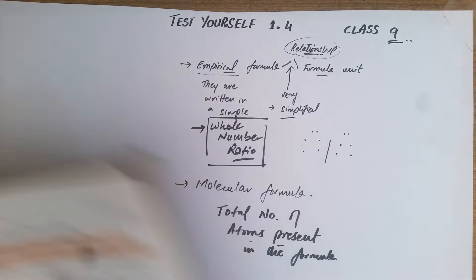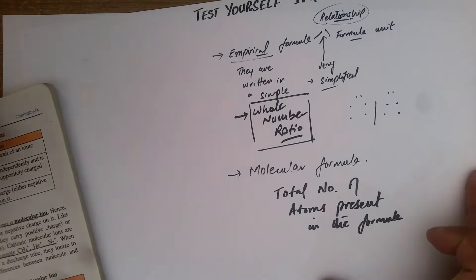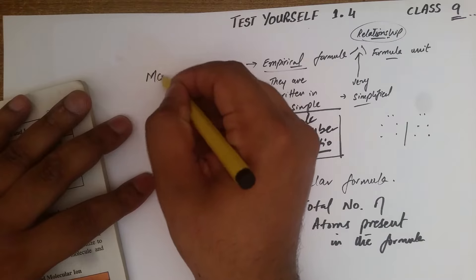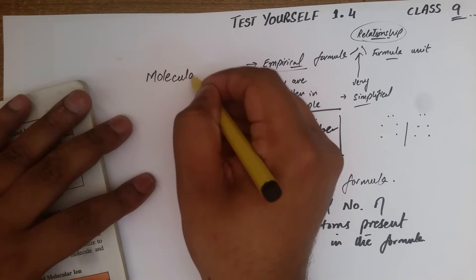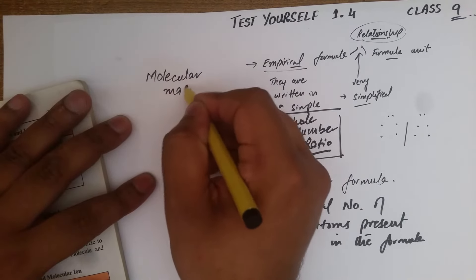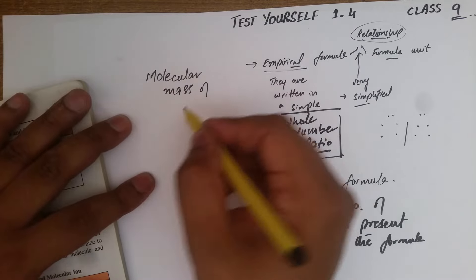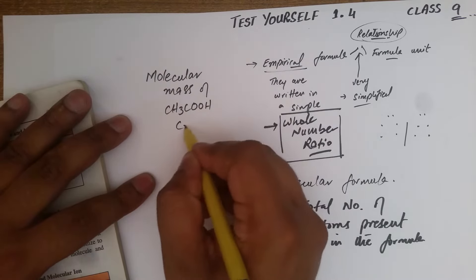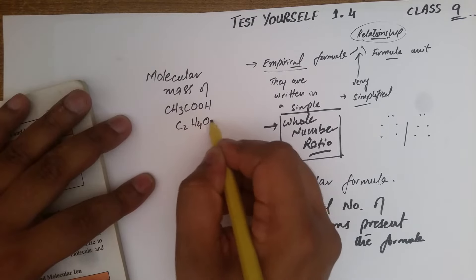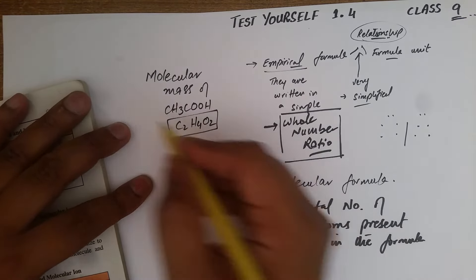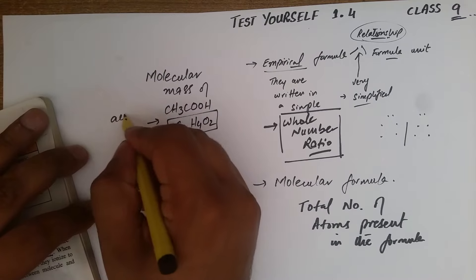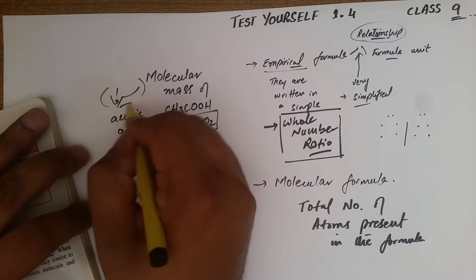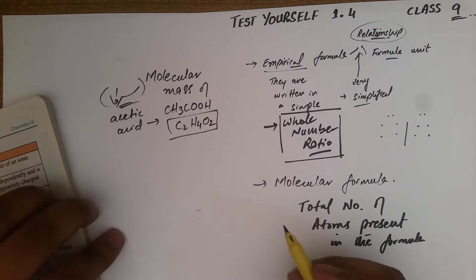Now we have to find the molecular mass. Students, here we have the page and the technique to calculate the molecular mass of CH3COOH — that is C2H4O2 — which is acetic acid. Don't forget acetic acid; it is something you can even find at home.